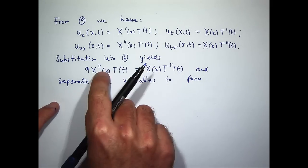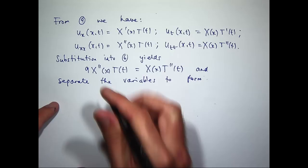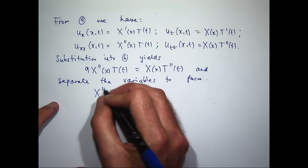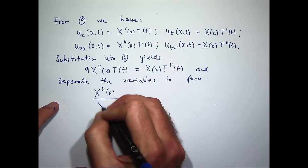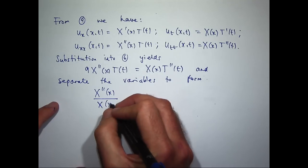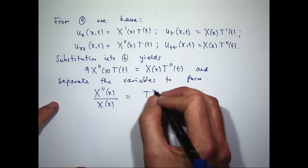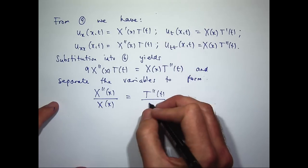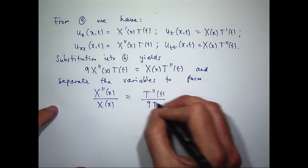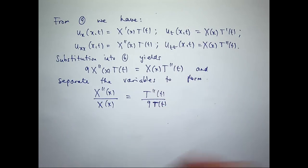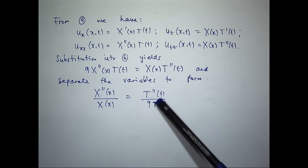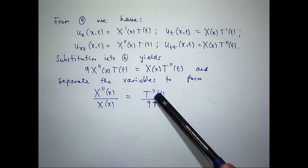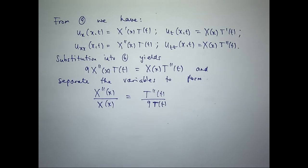So I'm going to bring big X over here and the 9 big T over here. This is very similar to what we did with the heat equation, but there's a small difference: in the heat equation we only had one derivative on the right-hand side. Now we've got two, so that makes it a little bit different.